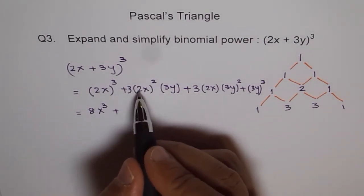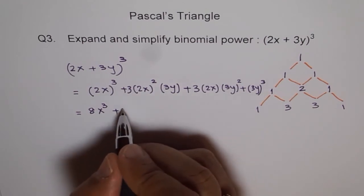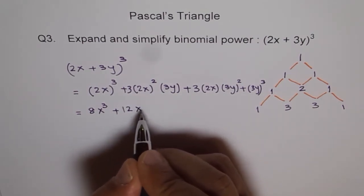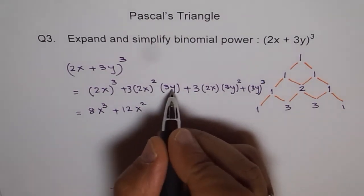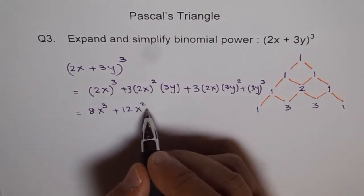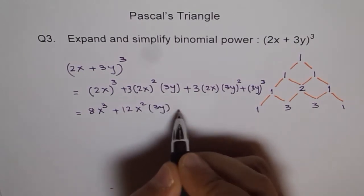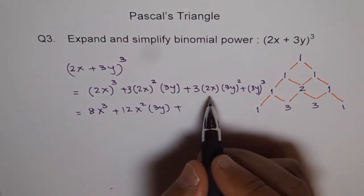Plus, when we write this, it is (2x)², and 2² is 4. 4 times 3 is 12. So let me write 12 here, x². I forgot to multiply by 3y. So let me do it in the next step.